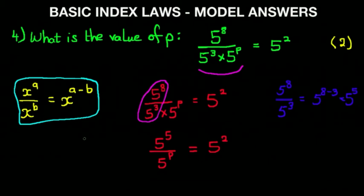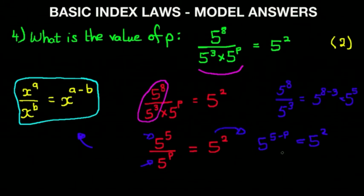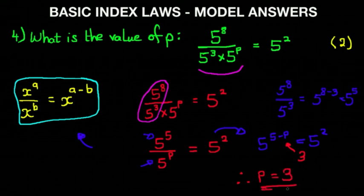From the same rule, 5 to the power of 5 divided by 5 to the power of p equals 5 to the power of 5 minus p, which equals 5 to the power of 2. So the equation becomes 5 to the power of 5 minus p equals 5 squared. Therefore 5 minus p equals 2, which means p equals 3. And that is our answer.